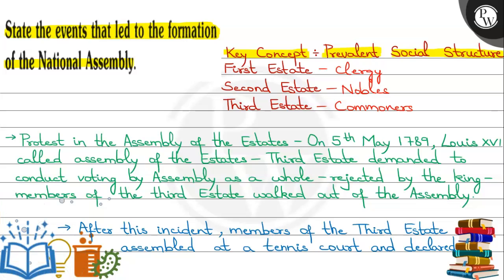On 5th May 1789, Louis XVI called an assembly of the estates. In this assembly, there was a protest. Why? Because the third estate wanted voting rights — they wanted it such that for every person there is one vote. But this demand was rejected by the king.